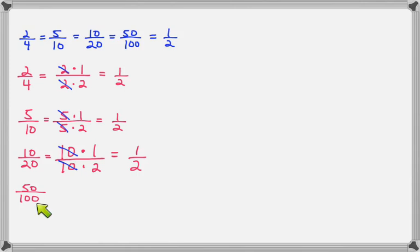And this one is 50 over 100. So I write the top as 50 times 1. Write the bottom as 50 times 2. And cancel out the 50s. And what's left is 1 half.